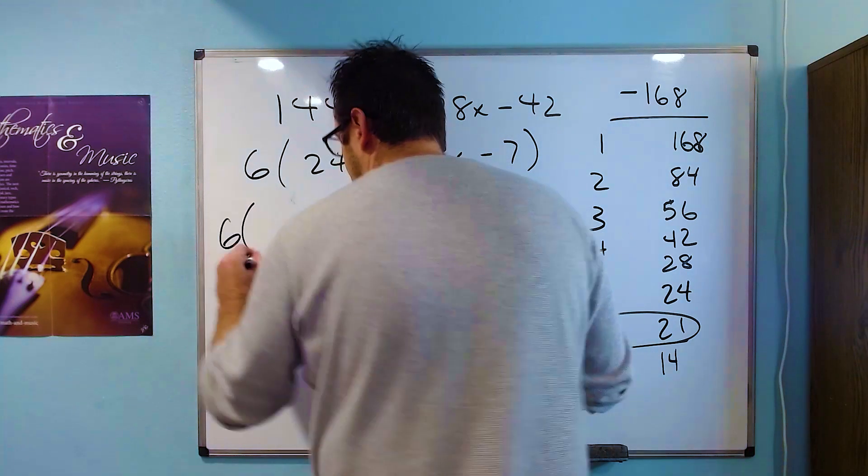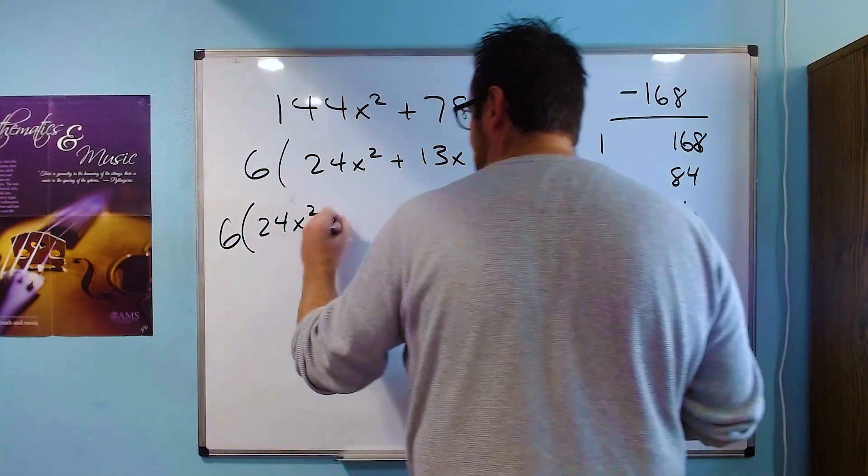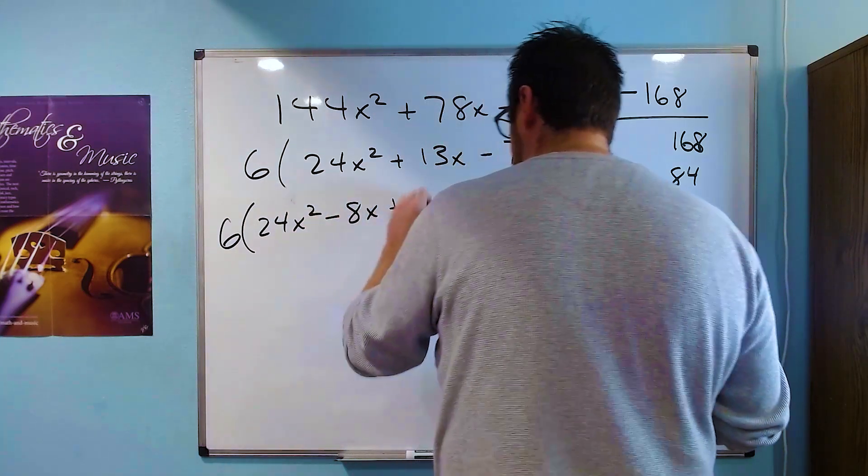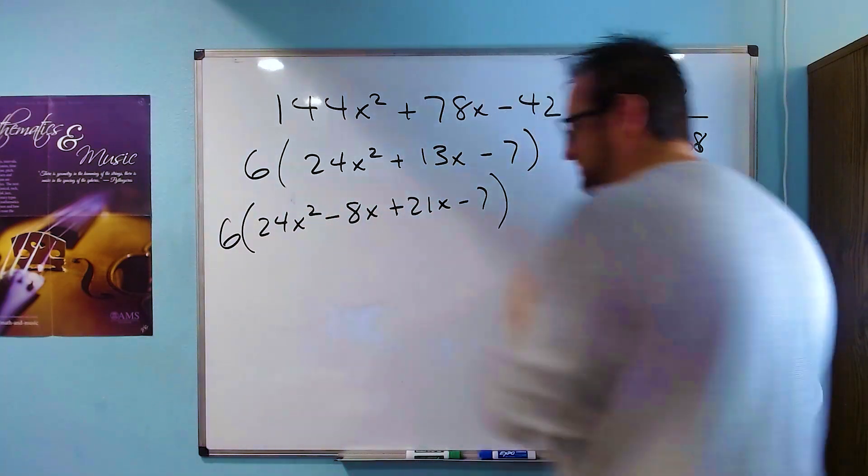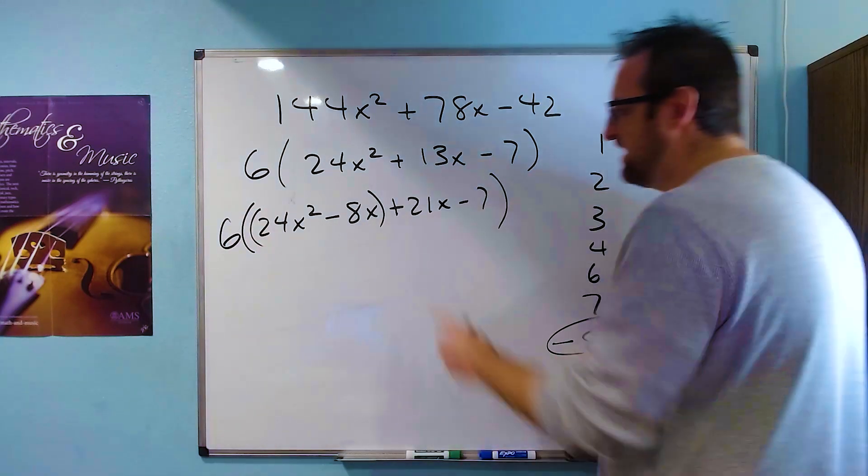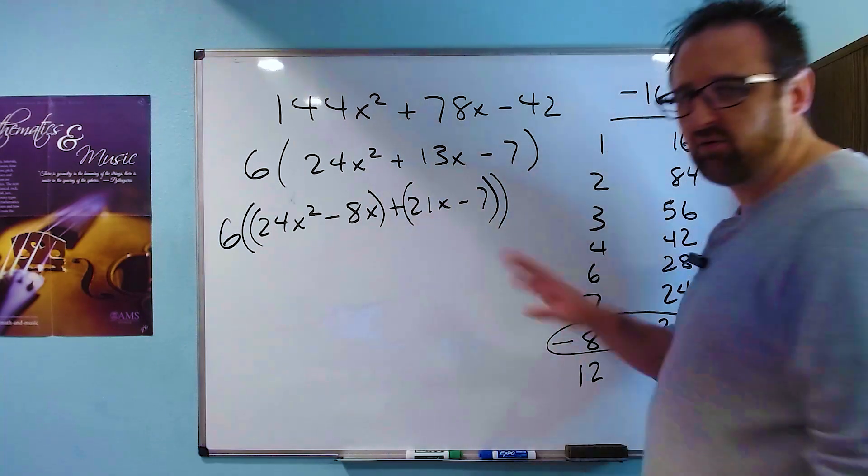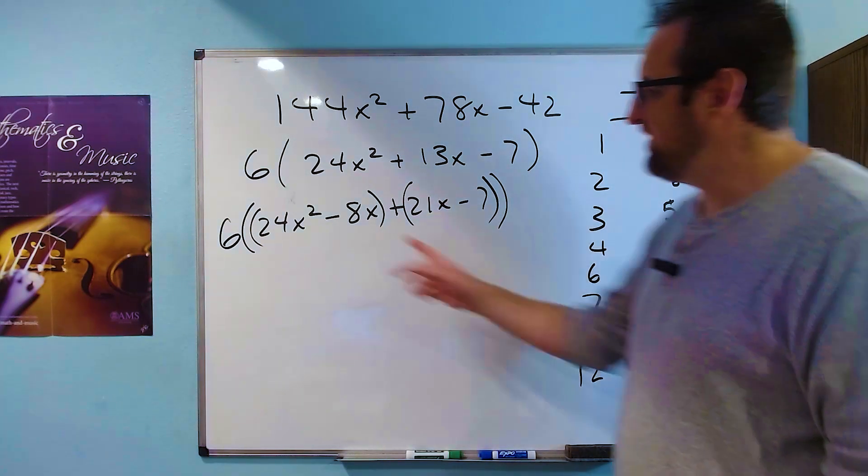So we're going to rewrite our 13x in terms of negative 8 and 21. We need to keep our 6 out here because it didn't go anywhere. We have 24x² - 8x + 21x - 7. And at this point, we're going to factor by grouping. So we group these first two guys. We have a plus in the middle here so we can just group there without worrying about any sign changes.